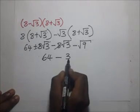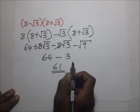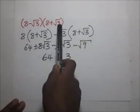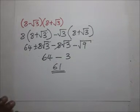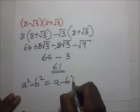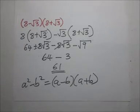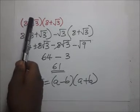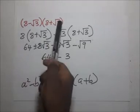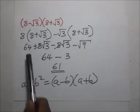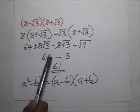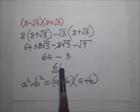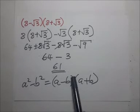So we remain with 64 minus √9, and √9 is 3, so 64 minus 3 leaves us with 61. Now if you look at this last example, it is more like the difference of two squares identity: (a − b)(a + b) = a² − b². Here a² is 64 and b² is (√3)² which is 3, so we directly get 61.